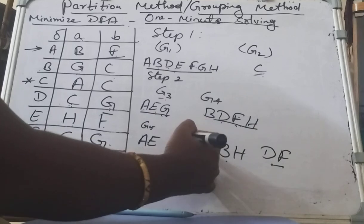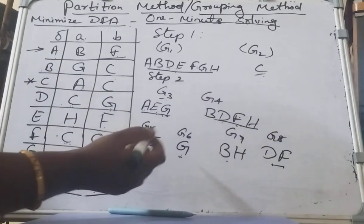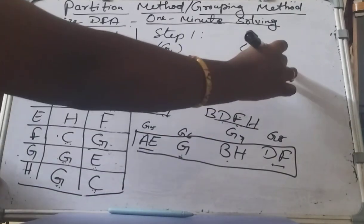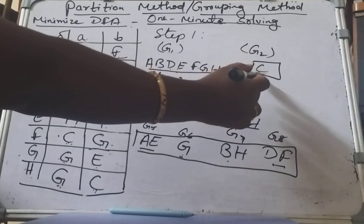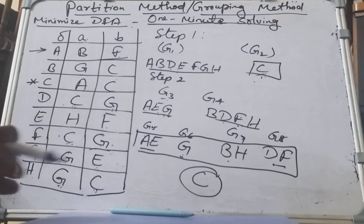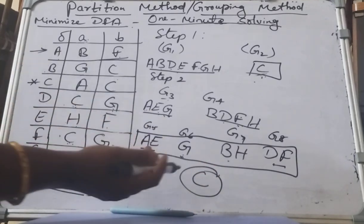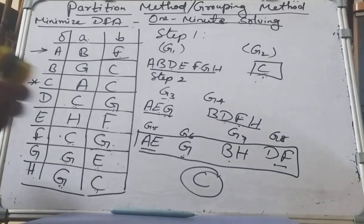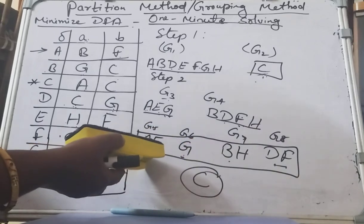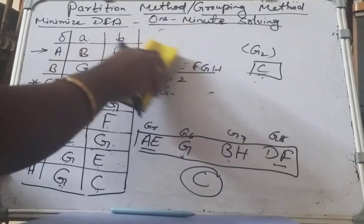We have now partitioned the entire DFA into groups: G5 = {A, E}, G6 = {G}, G7 = {B, H}, G8 = {D, F}, and G2 = {C}. Totally we have 8 groups, giving us 5 distinct states. Our original 8 states have been reduced to 5 states. Now construct the minimized DFA using these representative groups.